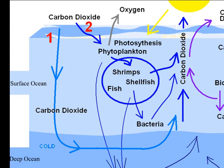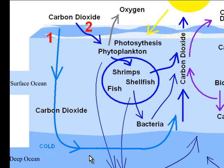The easiest way to imagine this is if you were to think of a fizzy drink and you were to heat it up — all the fizz, all the bubbles, would come out of it and go into the atmosphere. This carbon cycle is very slow. In fact, it really depends on the turning over of the oceans, and the turning over of the oceans can take anything up to a thousand years.